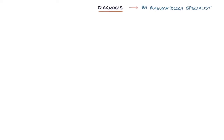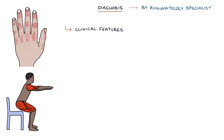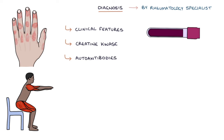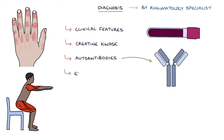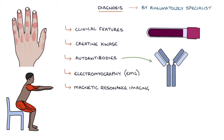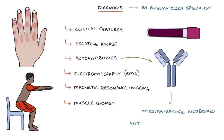A diagnosis will be made by a rheumatology specialist, based on the clinical features, elevated creatine kinase blood test, autoantibodies, electromyography (EMG), magnetic resonance imaging (MRI) scans, and a muscle biopsy. There are many myositis-specific antibodies with varying associations. The most common one to remember is anti-Jo-1 antibodies, associated with polymyositis.